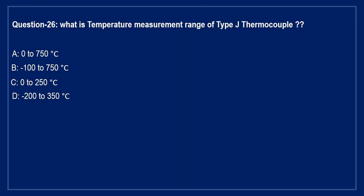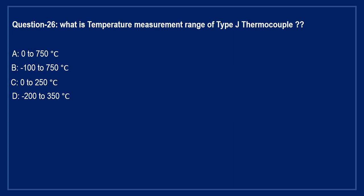What is the temperature measurement range of J-type thermocouple? Option A: 0 to 750°C. Option B: minus 100 to 750°C. Option C: 0 to 250°C. Option D: minus 200 to 350°C. The right answer is Option A — 0 to 750 degree centigrade.